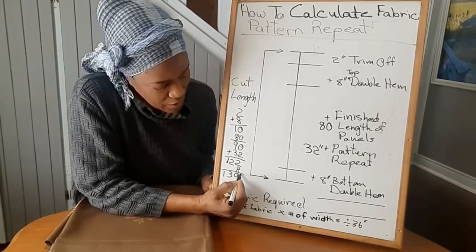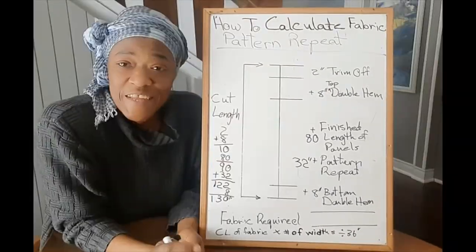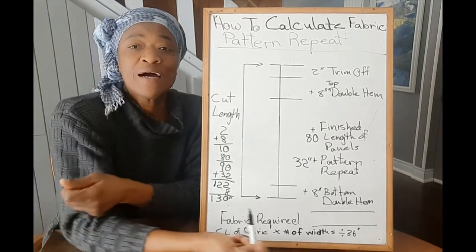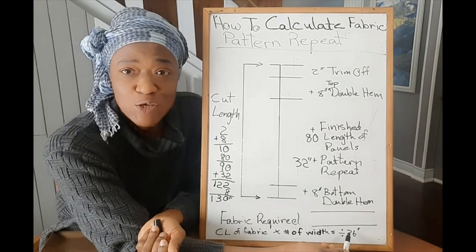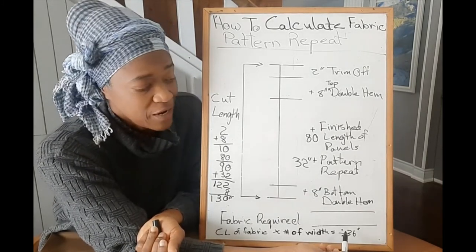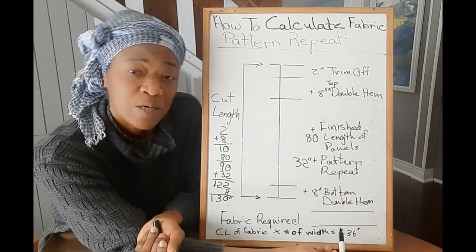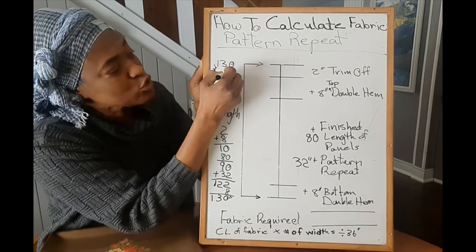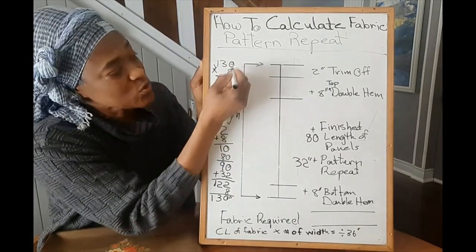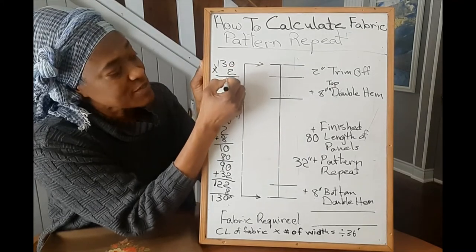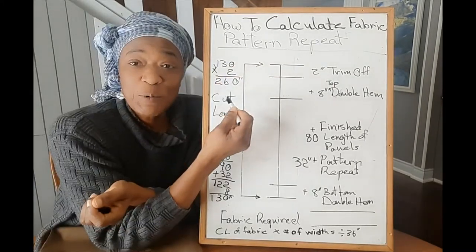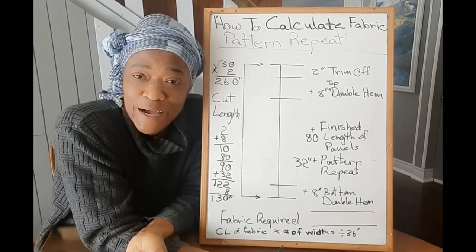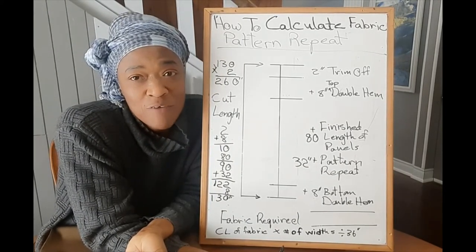The next thing to do is take your 130 inches and multiply by the number of widths that you need for making your custom curtains. Now take for example we need two widths, we multiply 130 by two. So that's 260 inches of fabric. But we don't go into the fabric store and buy our fabric in inches, we buy our fabric in yards.